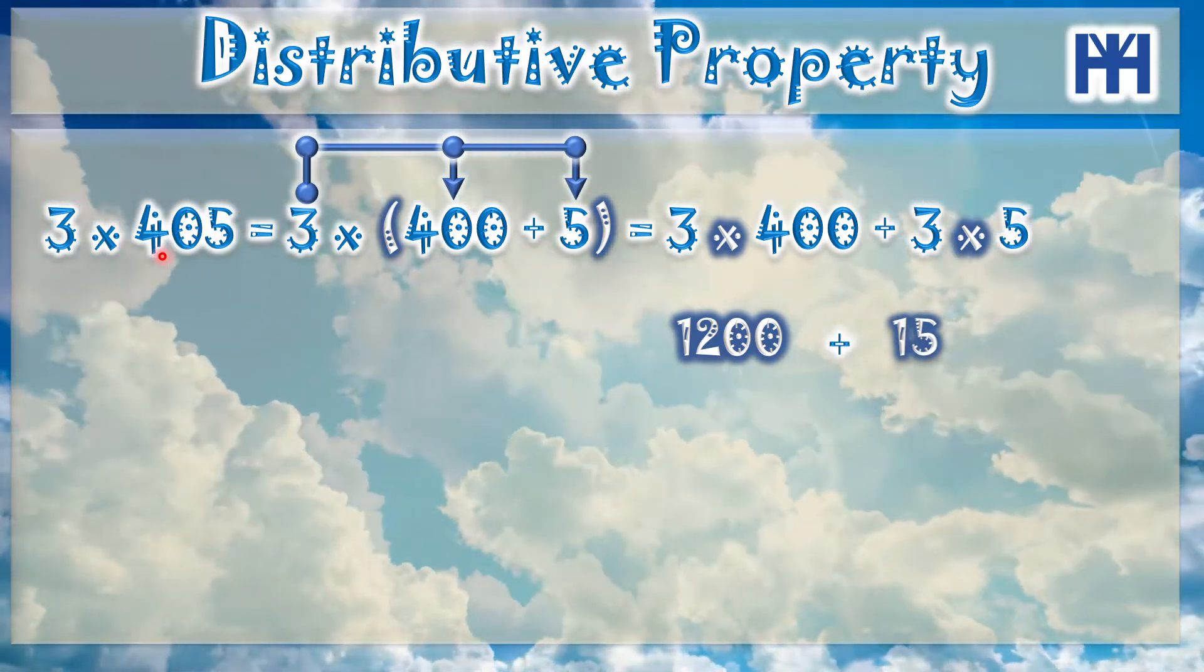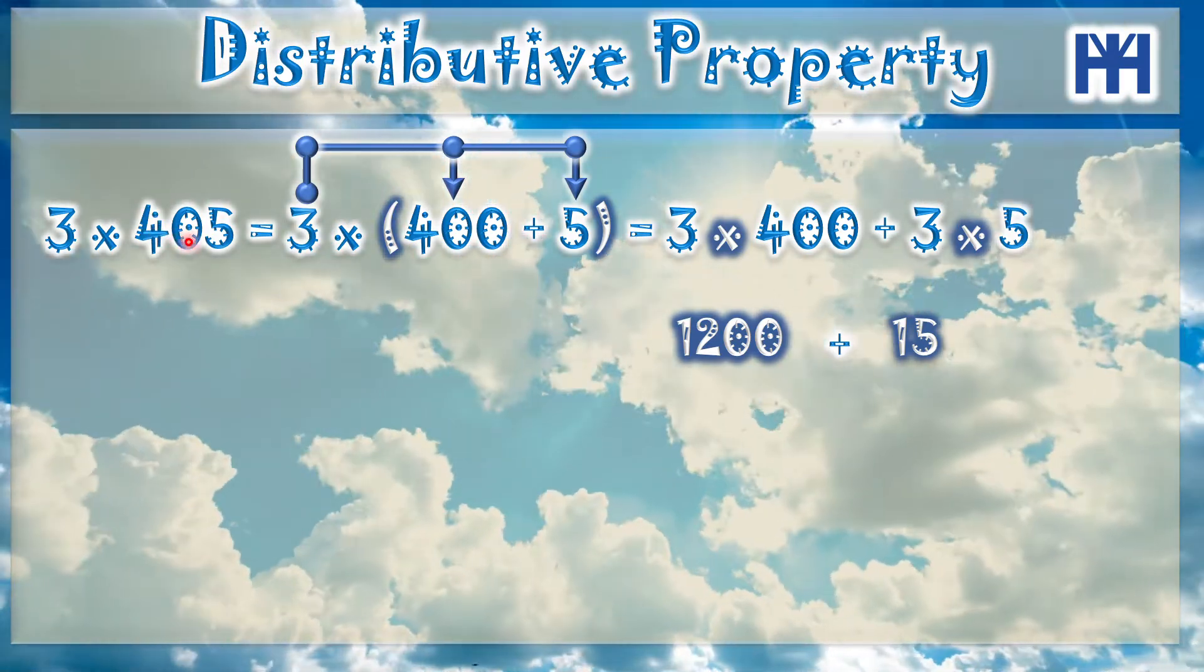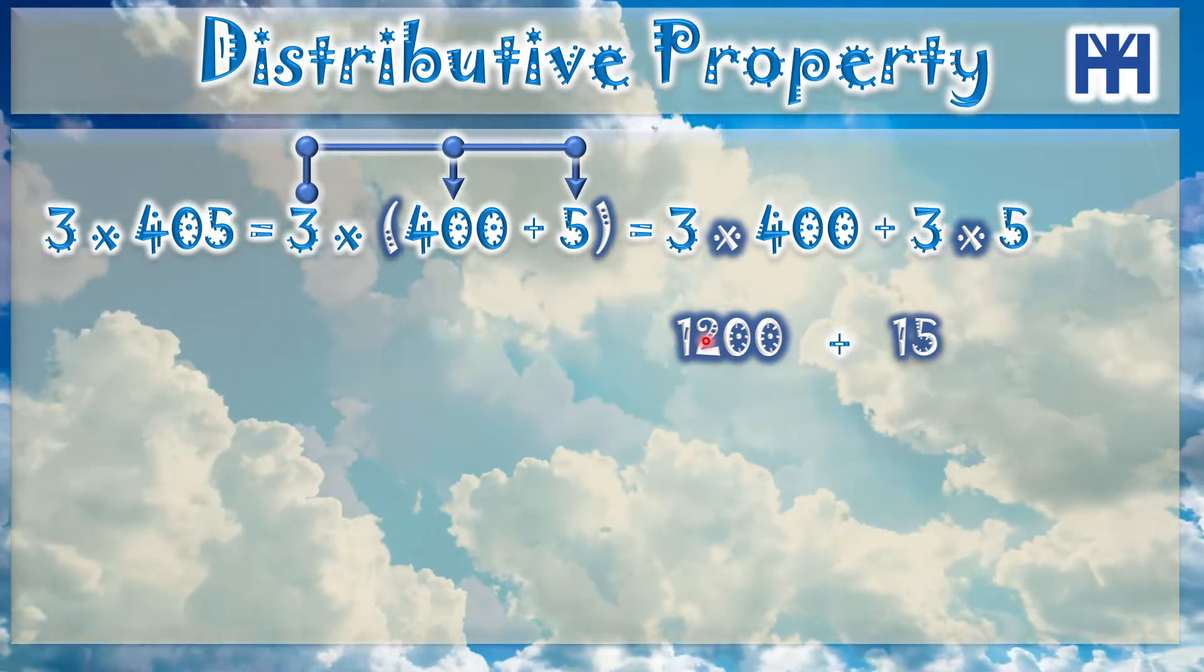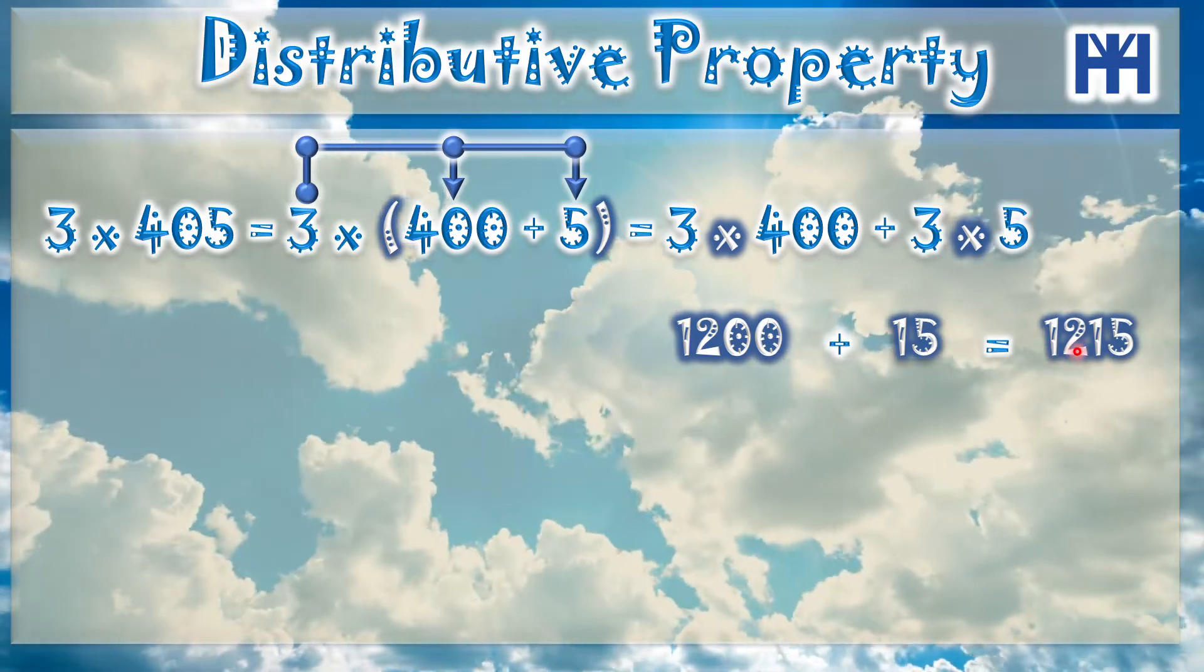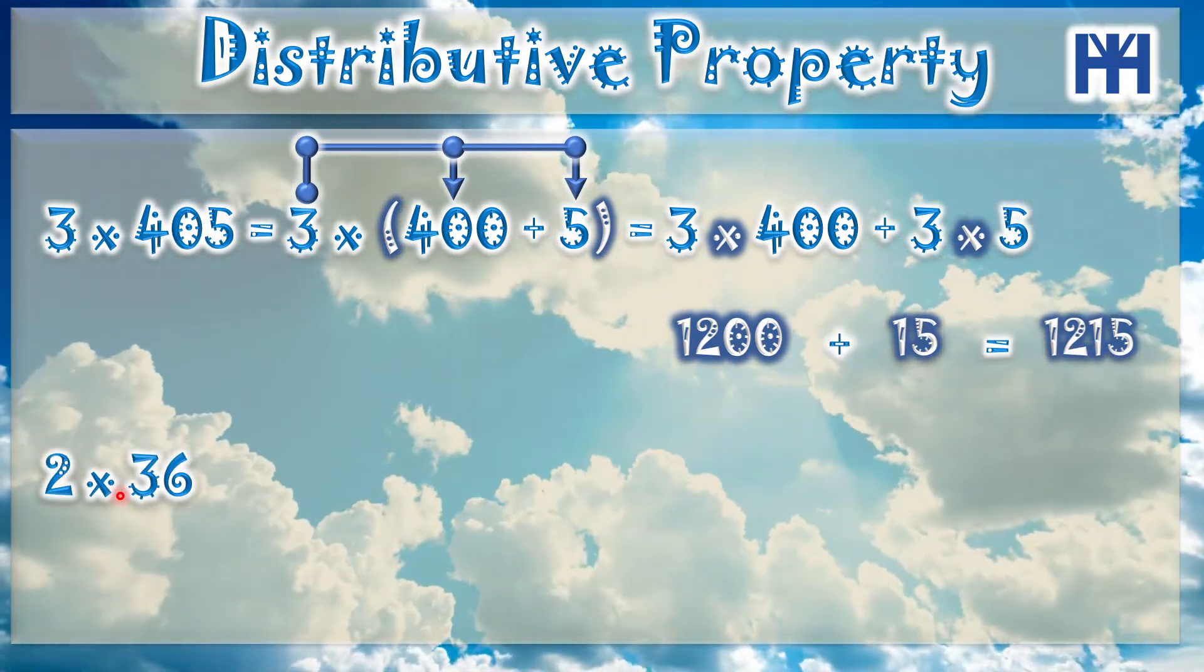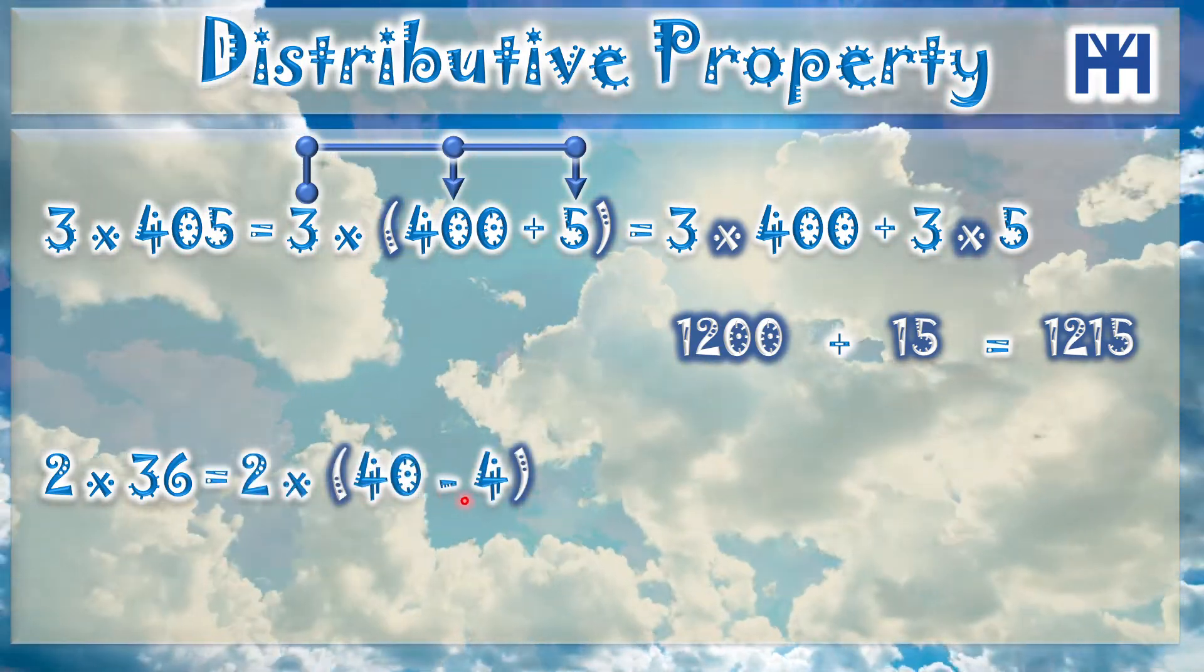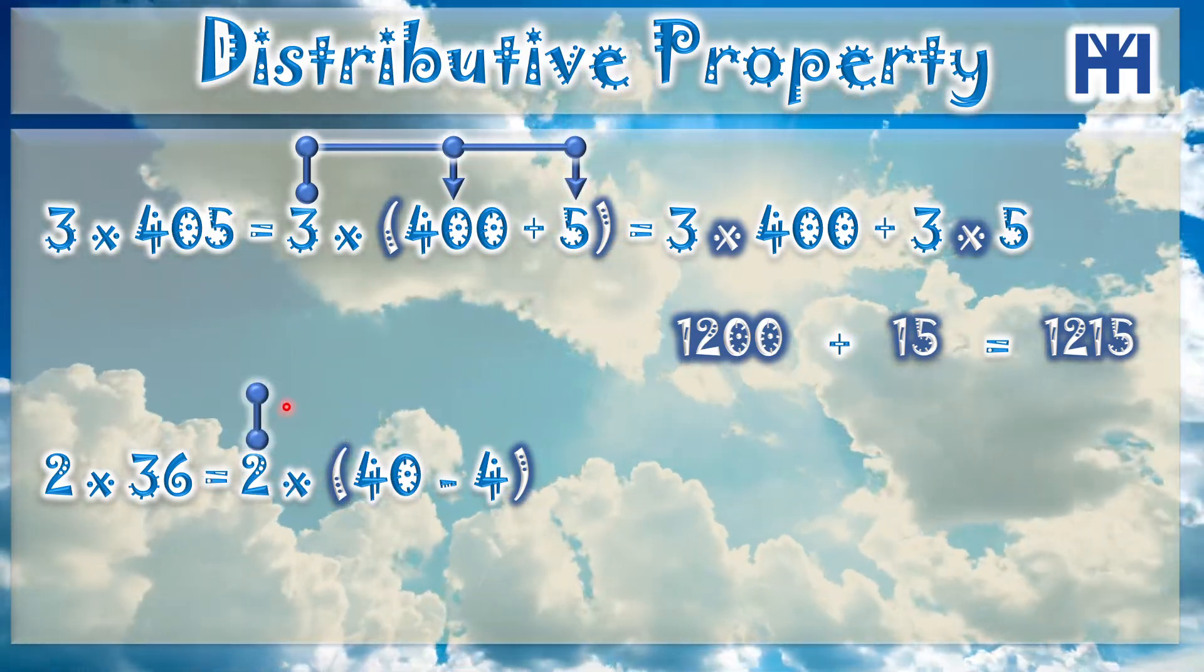If you find that there is a hard number to multiply, you can just separate it. Like the 405, make it 400 plus 5. 1200 plus 15 is 1215. Let's say we have 2 multiply 36. We can make it 2 multiply 40 minus 4, as 40 minus 4 is 36. So it should be 2 multiply 40 and 2 multiply negative 4.